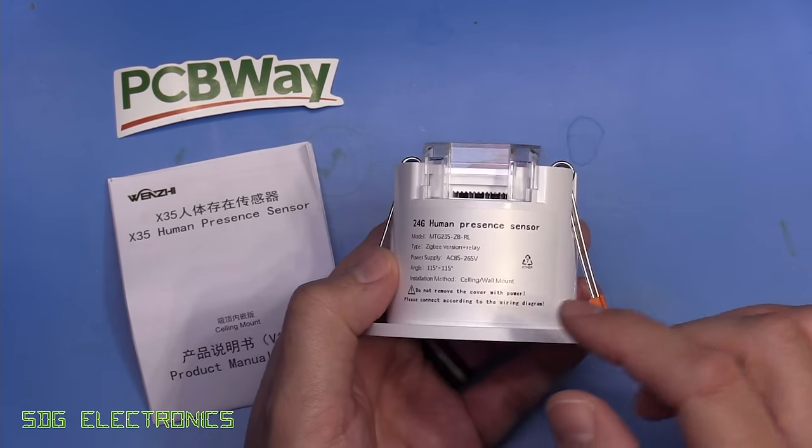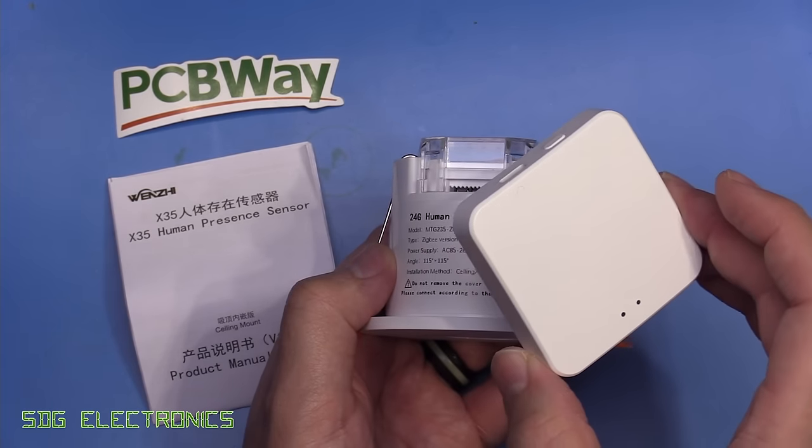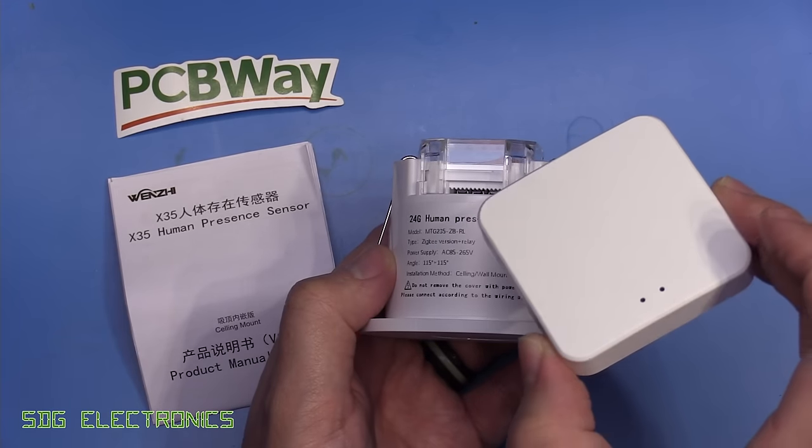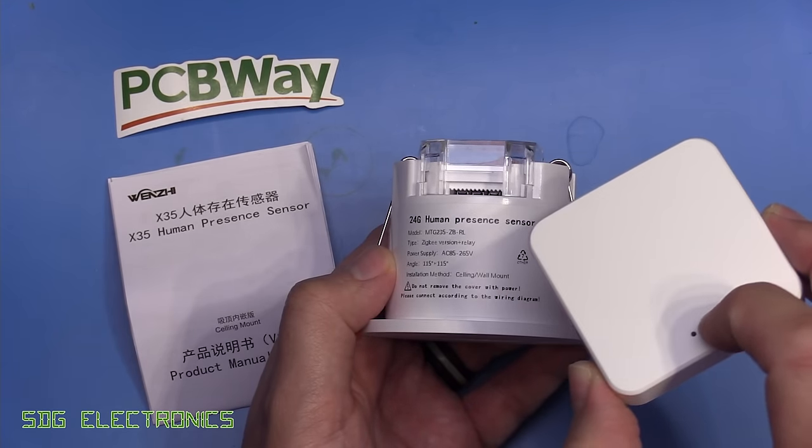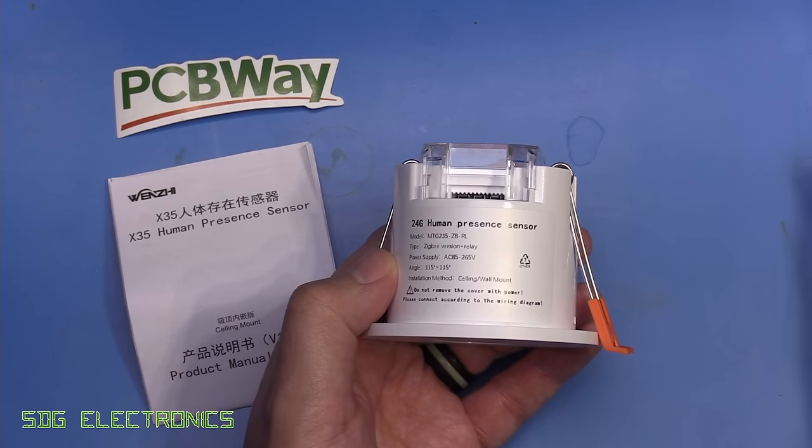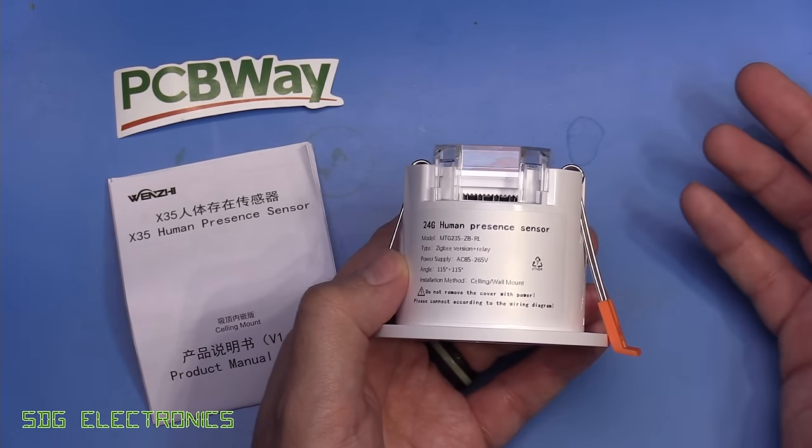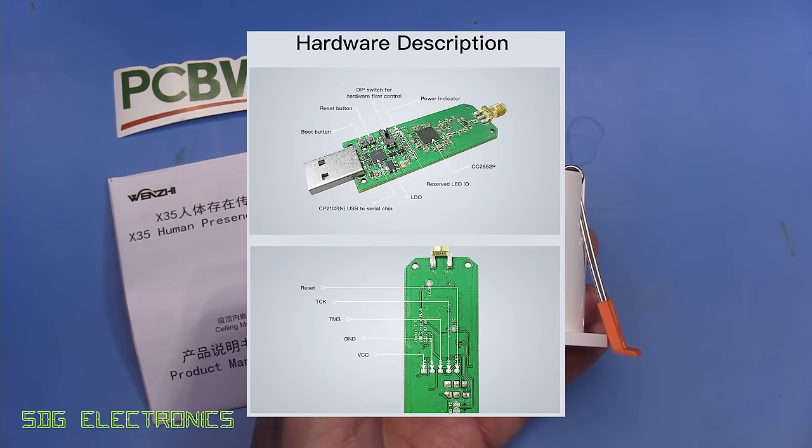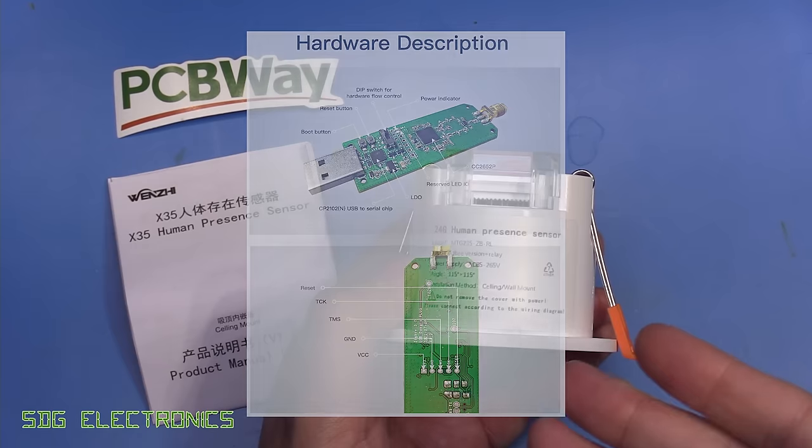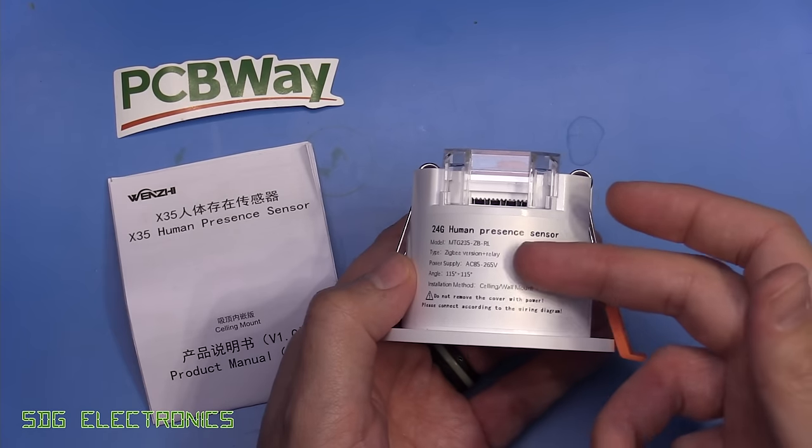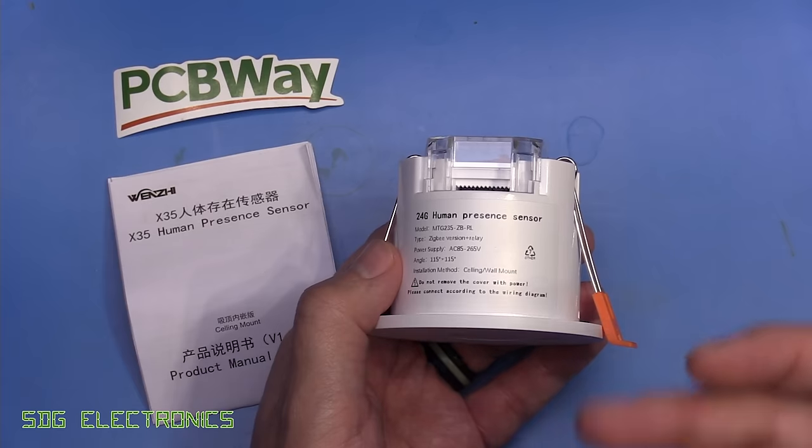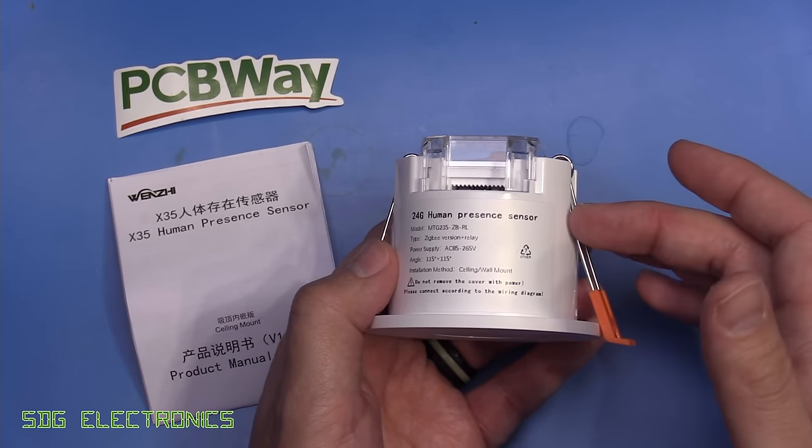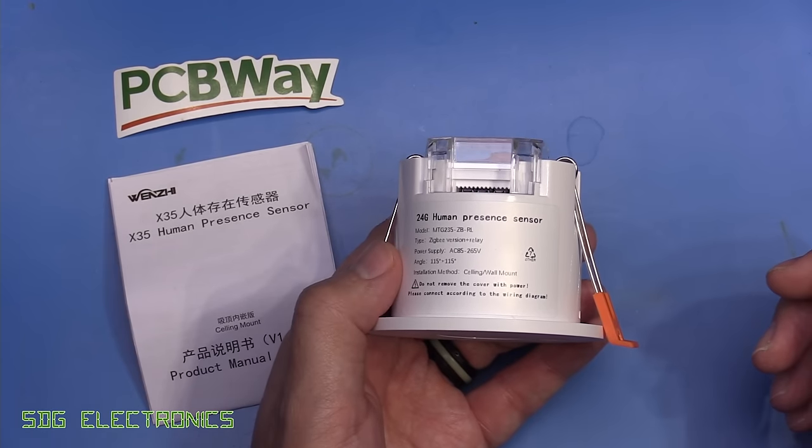You do need a Zigbee connection to set this up in the first place. You might want one of these Zigbee to wi-fi bridges, but these don't work with Home Assistant. If you're going to use it with Home Assistant, you'll need something like one of the Sonoff Zigbee dongles. Once you have that connection, you can set this unit up with settings like the radar power, sensitivity, distance range, and how long the relay stays active after it's not detected movement.